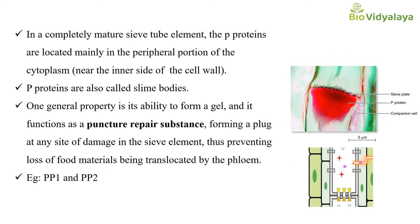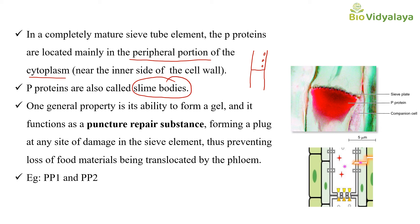In a completely mature sieve element, P proteins are located mainly in the peripheral portion of the cytoplasm — that means near the inner side of the cell wall, near the boundary of the cytoplasm. P proteins are also called slime bodies. One general property is the ability to form gel, and they function as a puncture repair substance, meaning they play an important role in damage control.